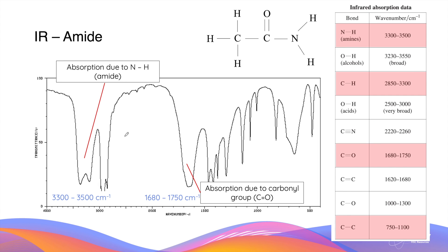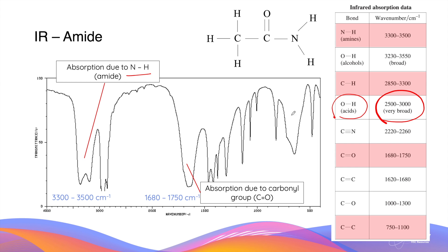An amide can also be easily identified using infrared spectroscopy due to the presence of two covalent bonds: the N–H bond in the amide, roughly in the same region as that of an amine, as well as the presence of a carbonyl C=O bond in the middle of the spectrum. This is quite similar to the infrared spectrum of a carboxylic acid; however, it is important to remember that in a carboxylic acid spectrum, we have a very broad signal due to the O–H bond, which is quite different in appearance compared to the absorption due to the N–H bond.